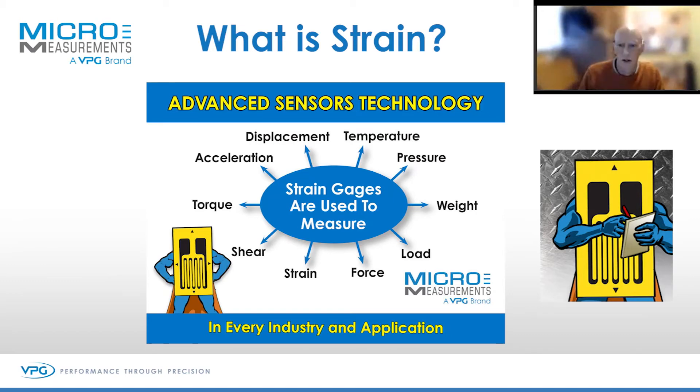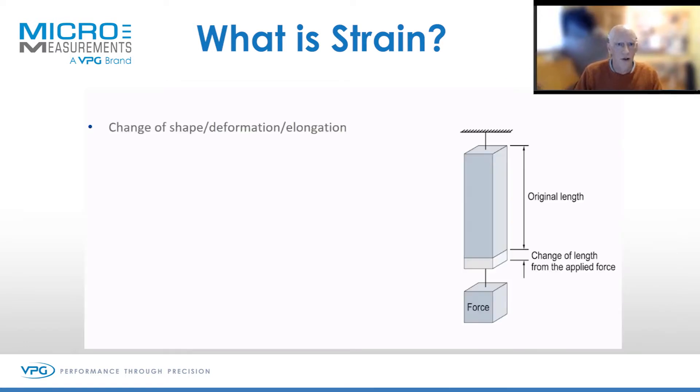What is strain? Some really simple slides here from first principles. Strain is a change of dimension or shape, a physical change described in engineering terms.